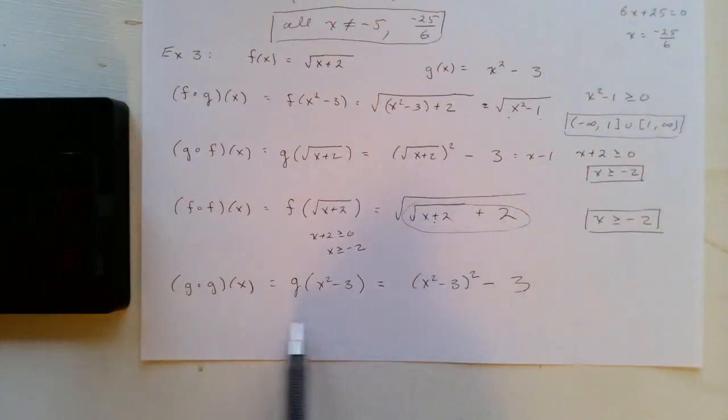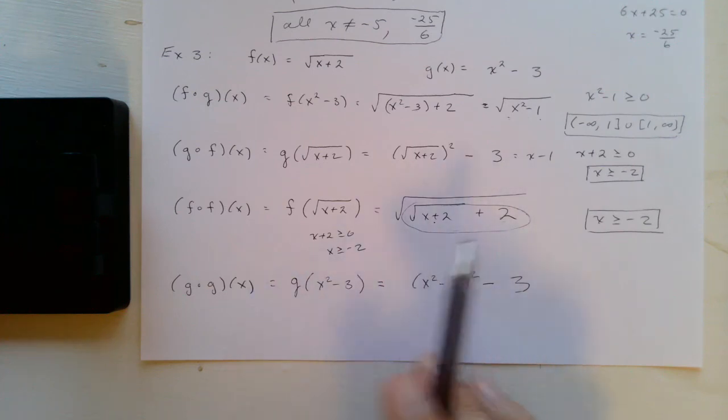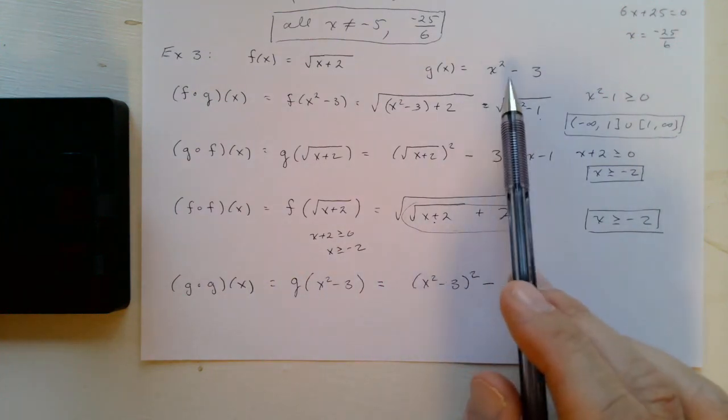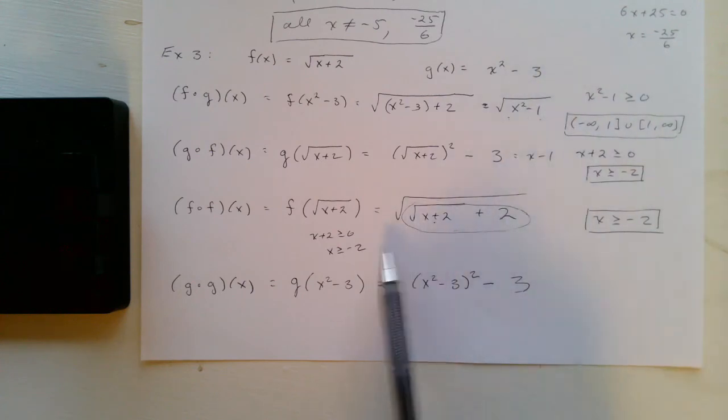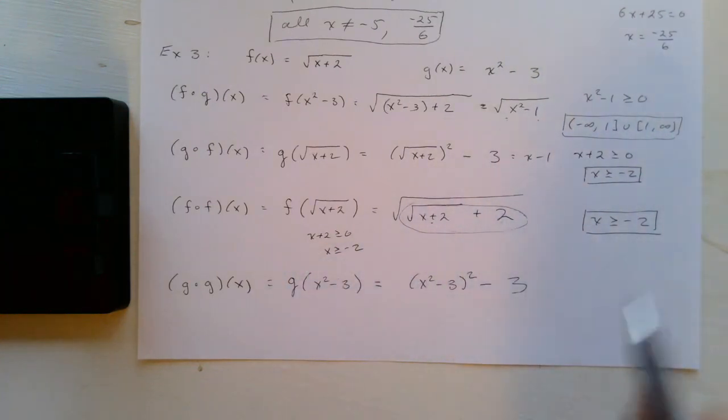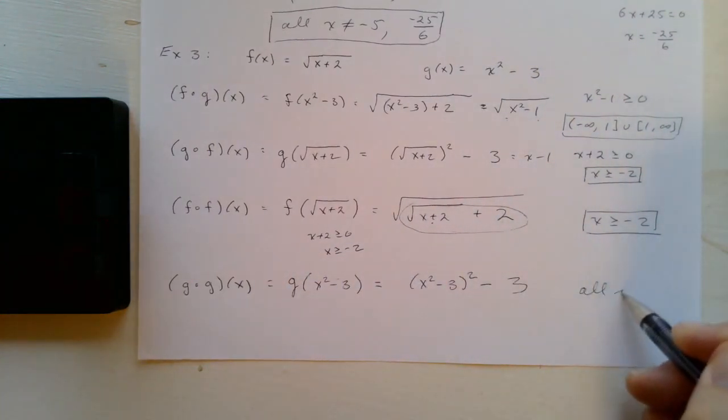And then g composed with g of x, if we compose it you'll have x squared minus three, that whole thing squared, minus three. You don't have to multiply anything out to find the domain, because g of x is a polynomial, it's defined everywhere, so this composition will be defined everywhere, so the domain will be all reals.